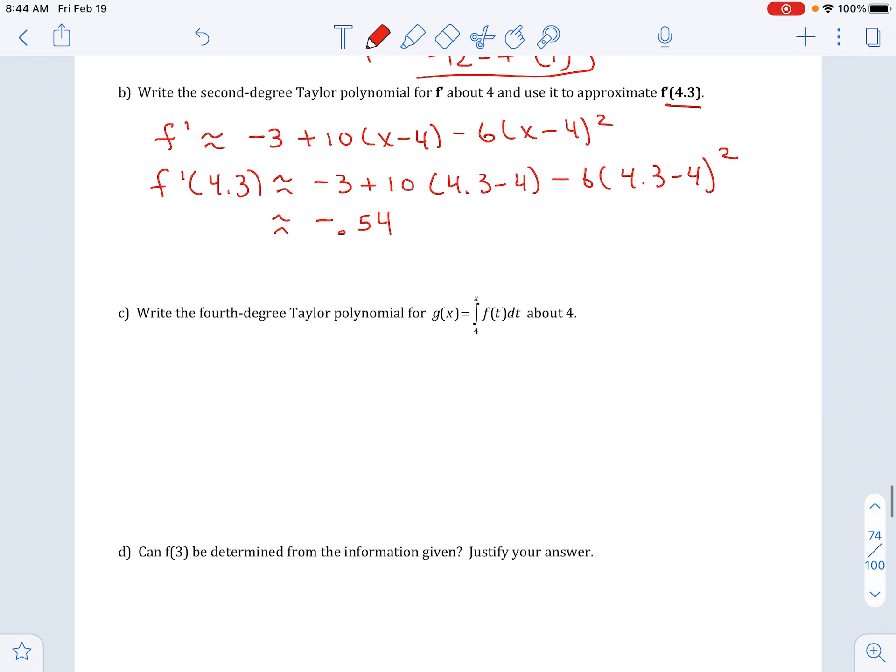Next, I want the 4 degree polynomial for g of x. And g of x is really the anti-derivative of f. And it's telling me that my final answer should be about 4 or centered at 4 again. So you'll have that x minus 4 in your answer again.